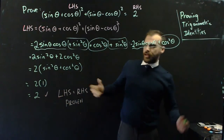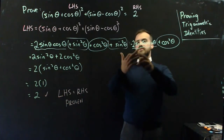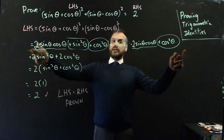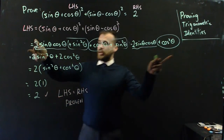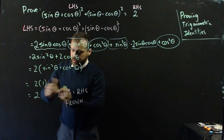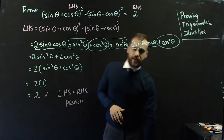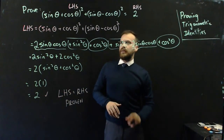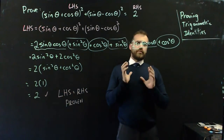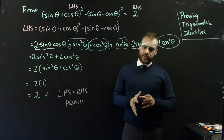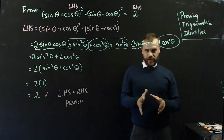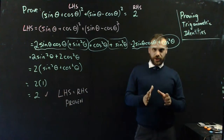So there's another little tip: sometimes things get really wild and then they come back down again. These trig identities take practice, practice, practice.